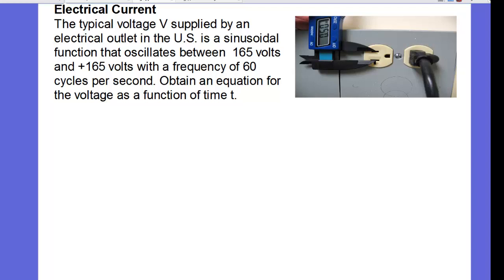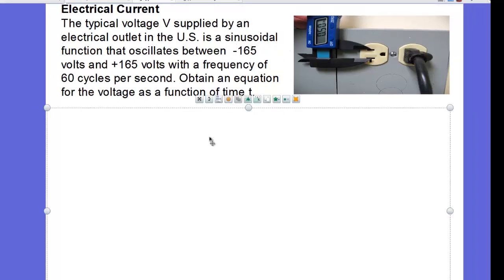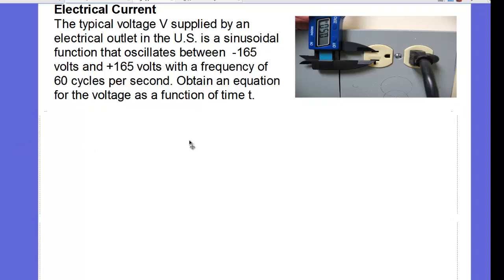Let's move on to another application everywhere around us, and that's electrical current. Alternating current uses a sine wave in the voltage of the electricity that is supplied. Now, a typical electrical outlet in your house is sinusoidal, and it oscillates between negative 165 and 165 volts with a frequency of 60 cycles per second. Let's make an equation for that.